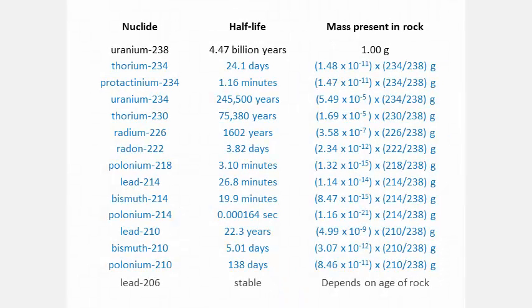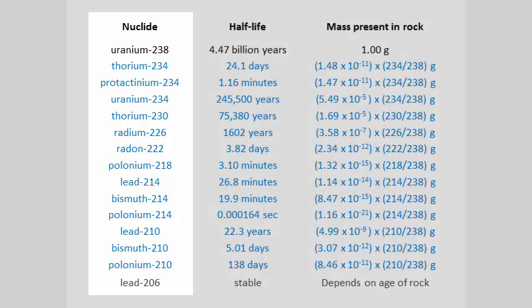For a rock containing one gram of U-238, this table shows the mass of each decay product present in the rock. The left column shows the decay sequence, uranium-238 to thorium-234, thorium-234 to protactinium-234, and so on, down to lead-206, which is stable.